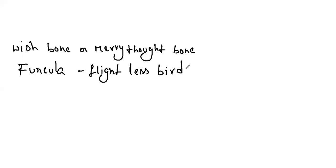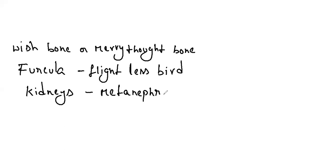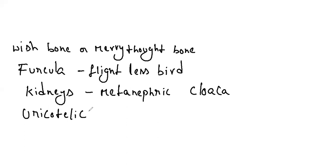Flightless birds include ostrich and emu. Kidneys are metanephric, which is a trilobed kidney. Ureters open into the cloaca. Urinary bladder is absent, as is the gallbladder. The members are uricotelic because they excrete uric acid, which is a semi-solid substance. Marine birds excrete what is called guano.